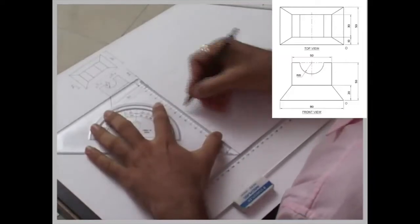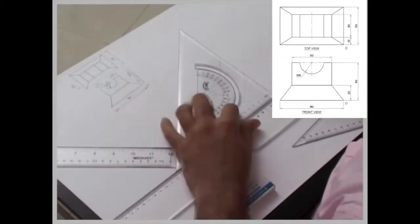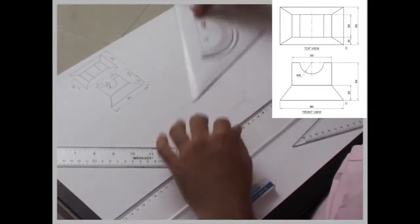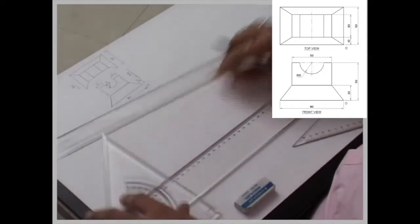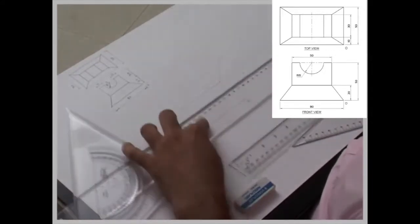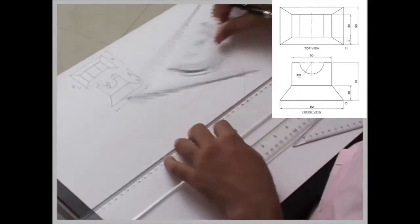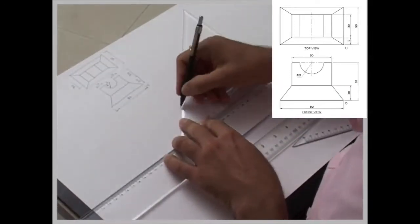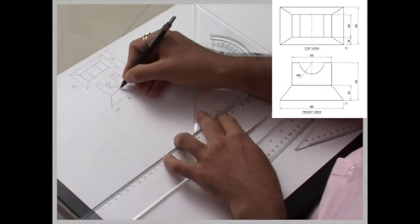So I have taken length 80, height 50, width 50. Now if you see in this case, there are two surfaces: surface number 1 and surface number 2. This is surface number 1 and this is surface number 2.